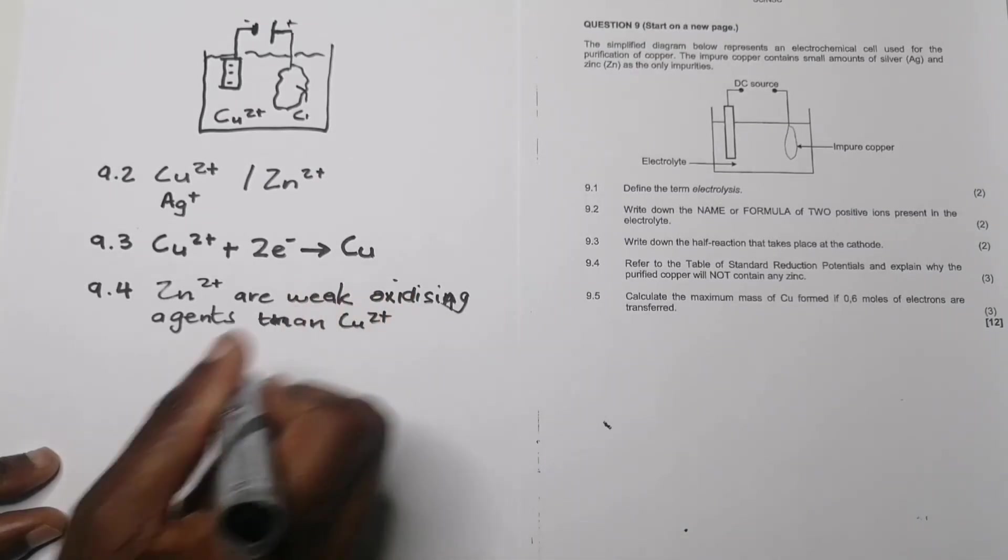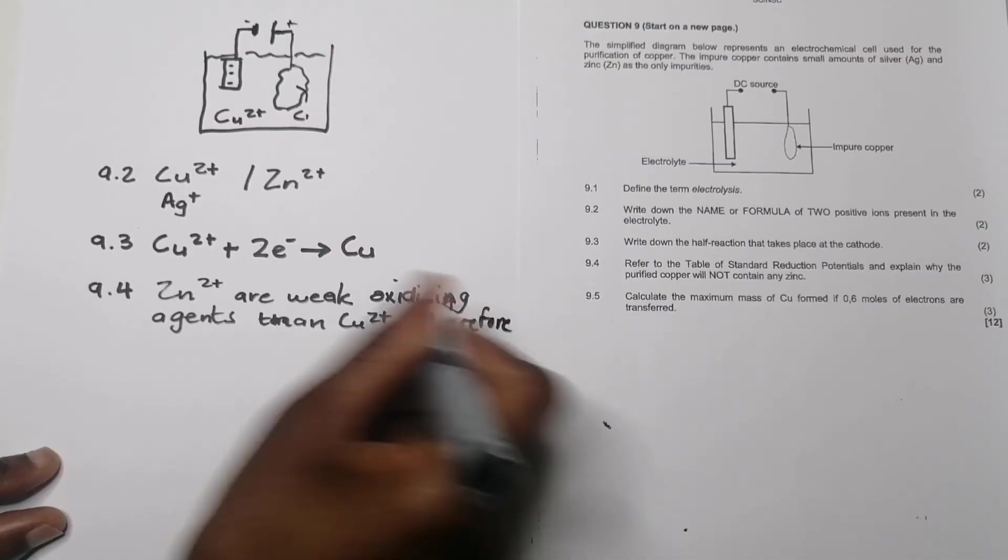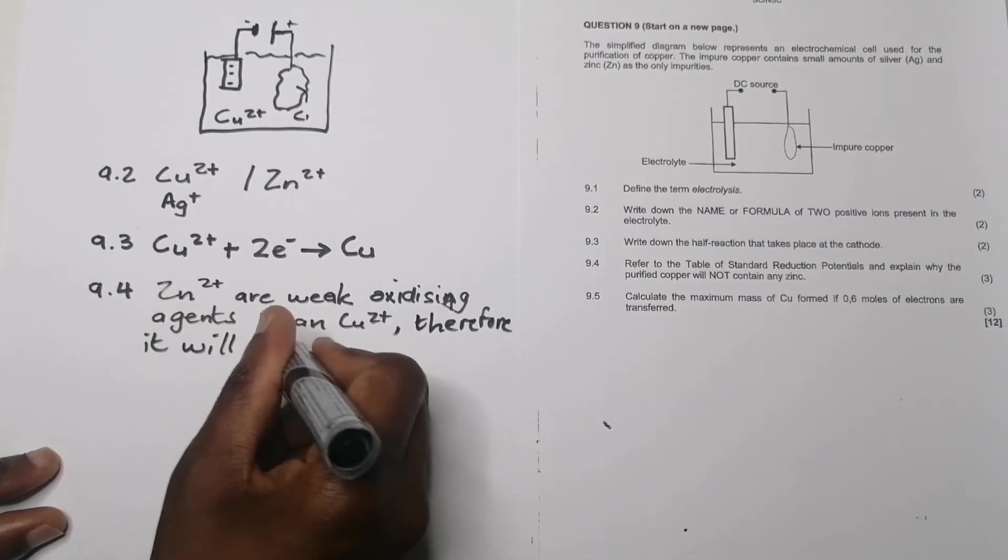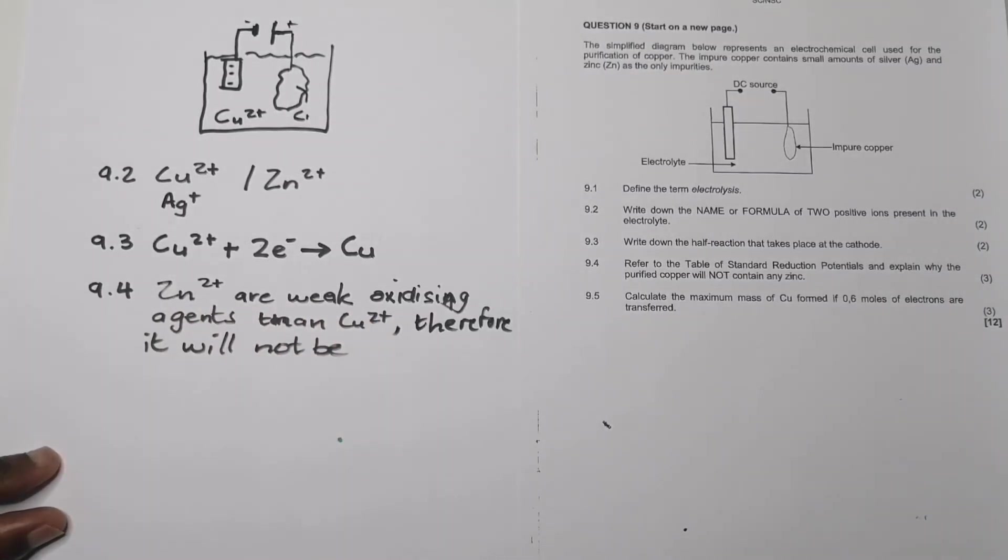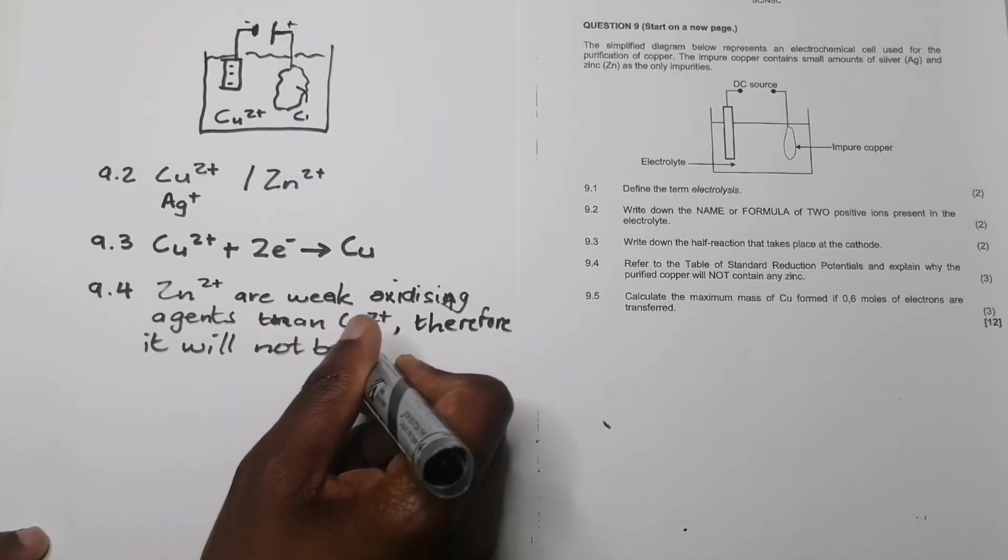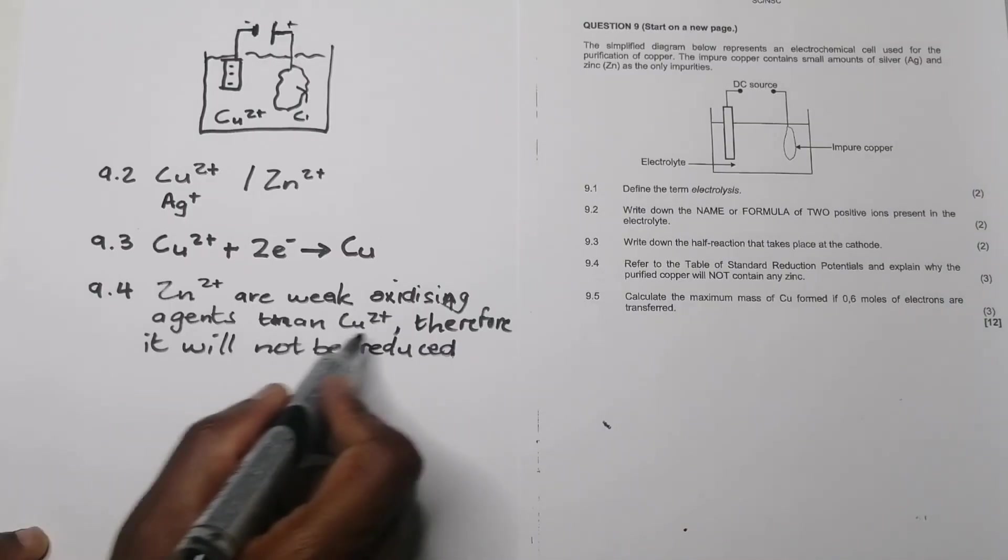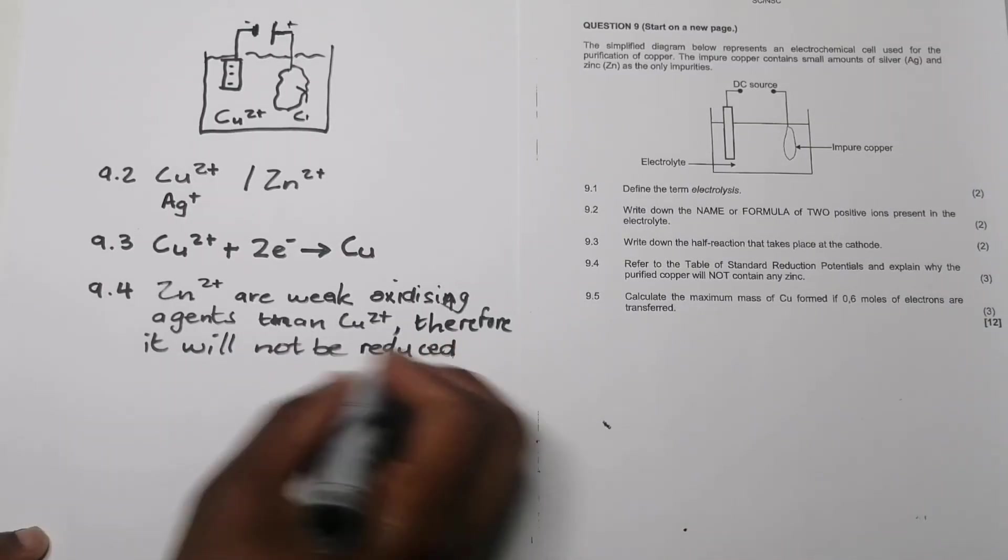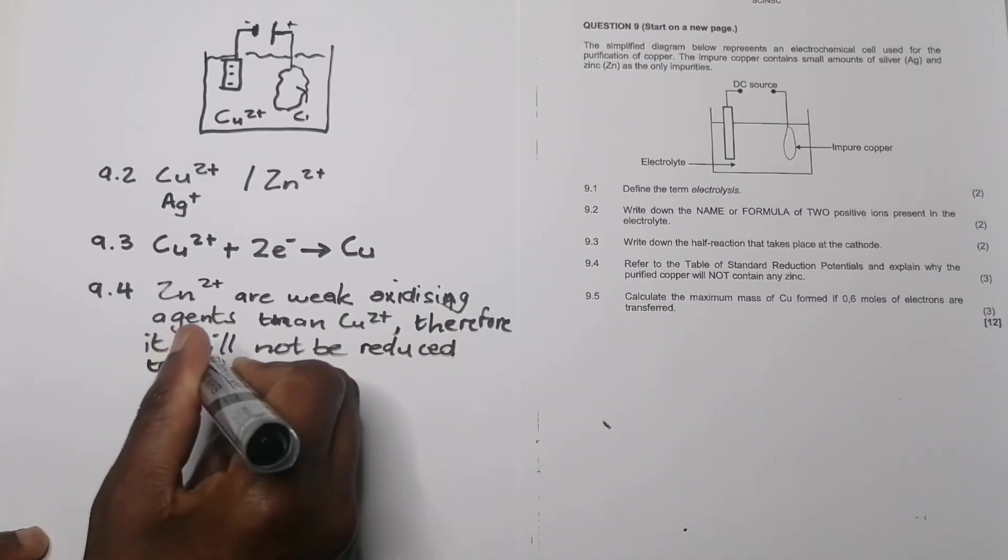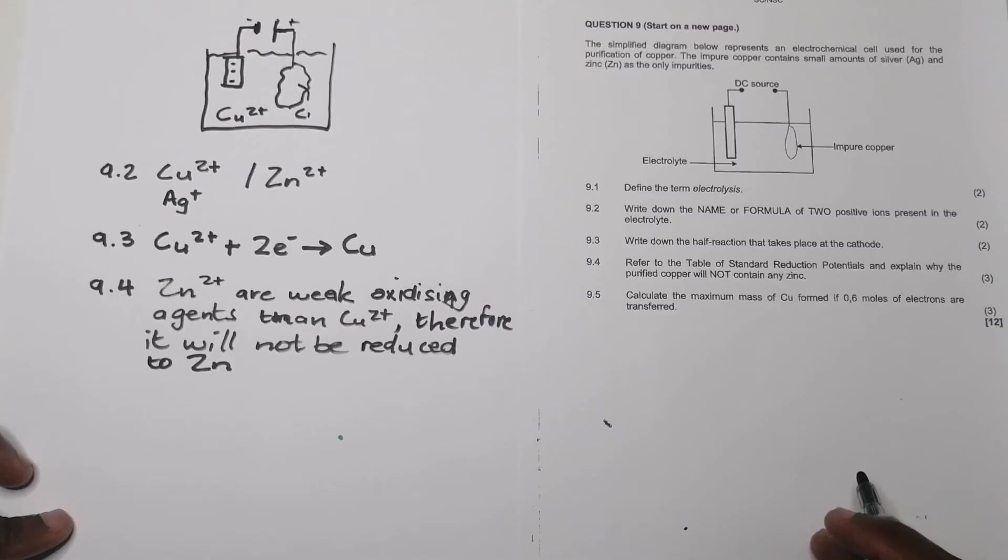Therefore it will not be reduced to zinc. To answer those questions, ladies and gentlemen, please always just refer to that standard reduction potentials table. It makes it much easier to see which one is easier to oxidize and which one is easier to reduce. Zinc is a weaker oxidizing agent so it will not be reduced to zinc.